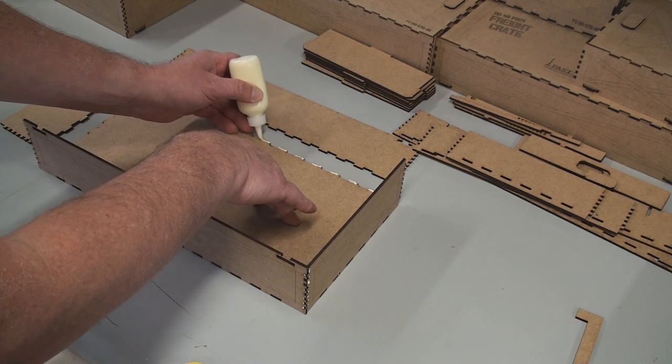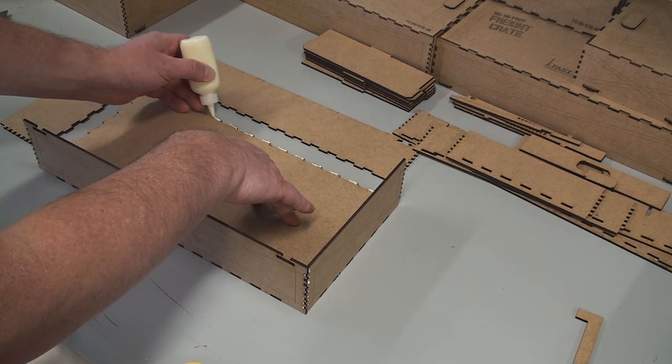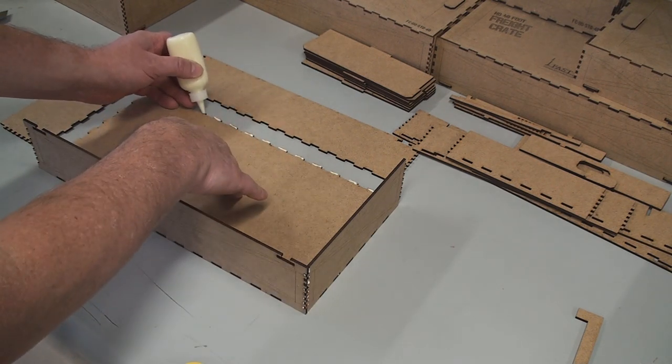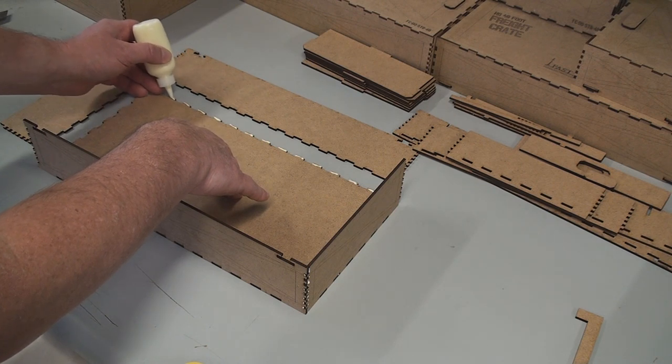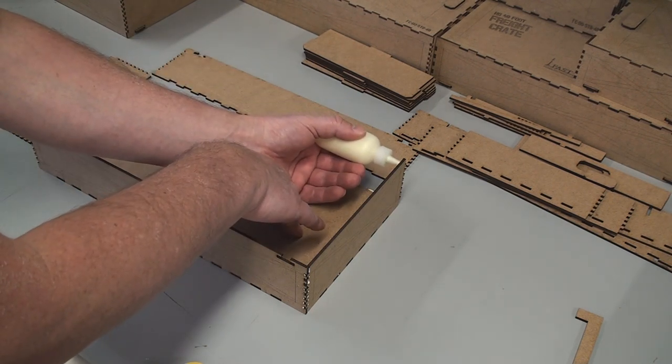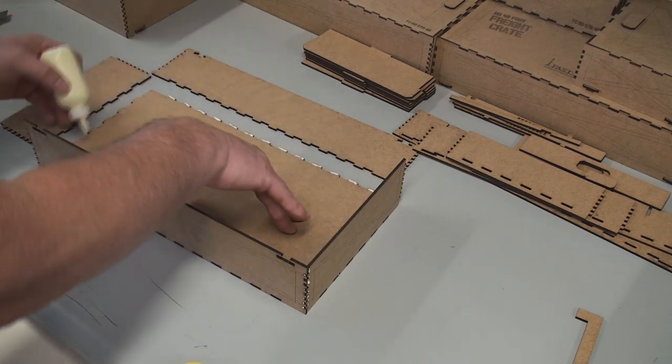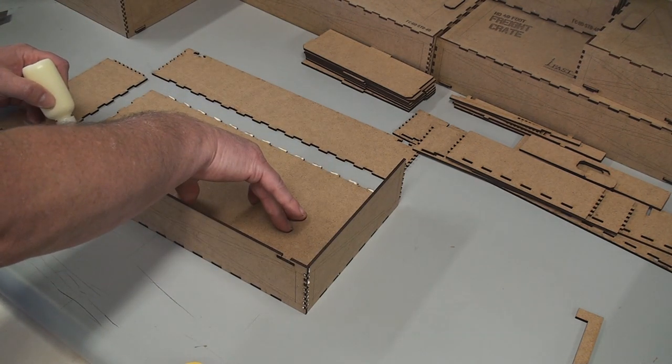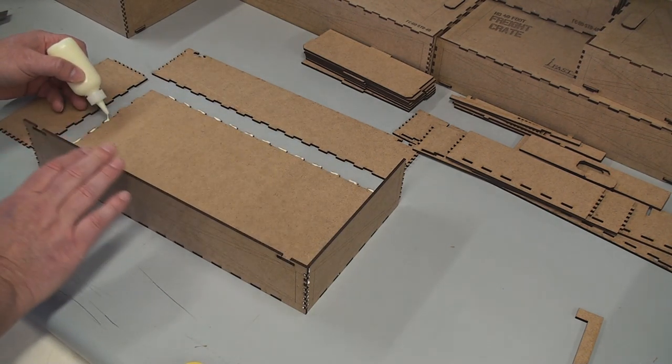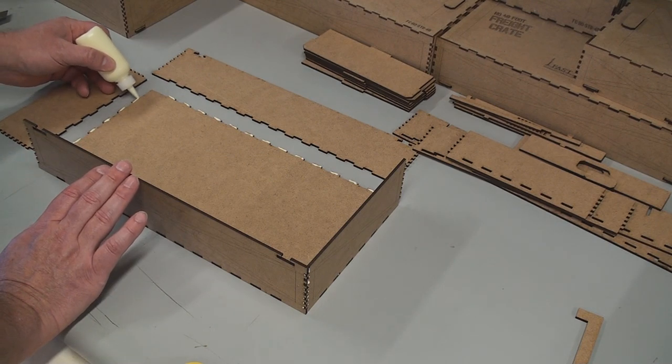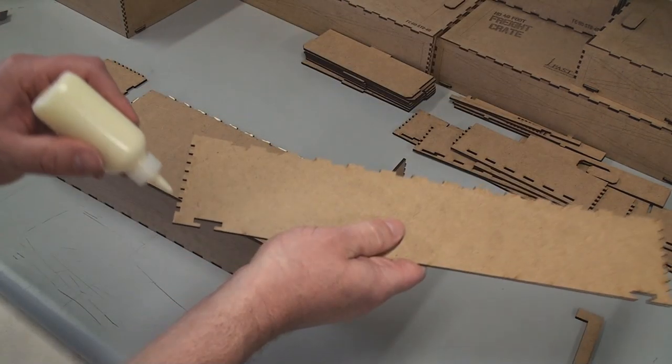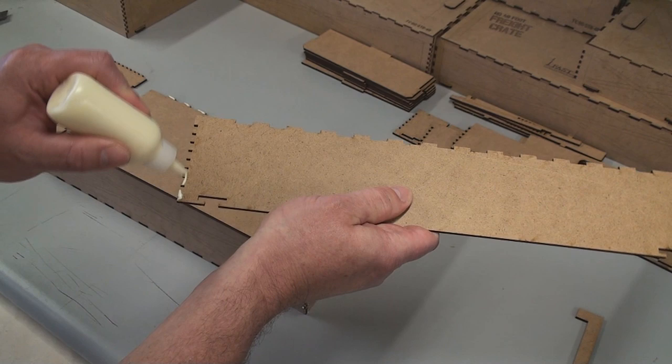Because you don't want to leave the glue sitting too long on the outside of the box where it's oozing out. It will set up very quick and can be a little bit more difficult to get off. So I like to just get the parts glued together as fast as possible, and then do a quick cleanup afterwards.